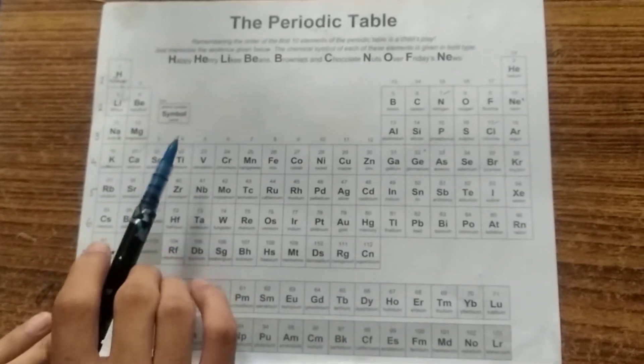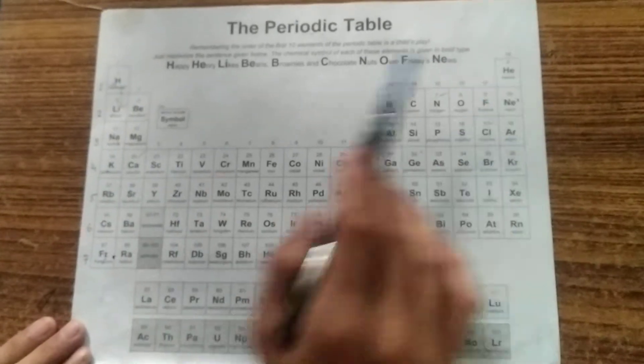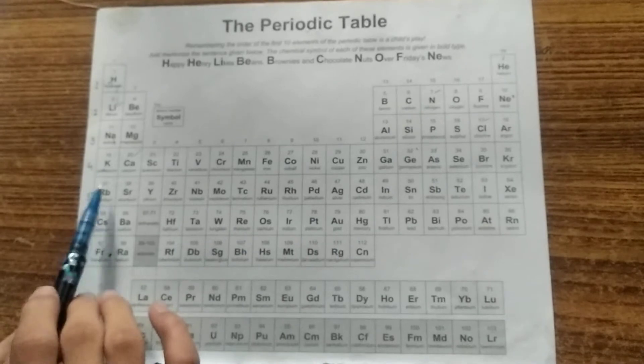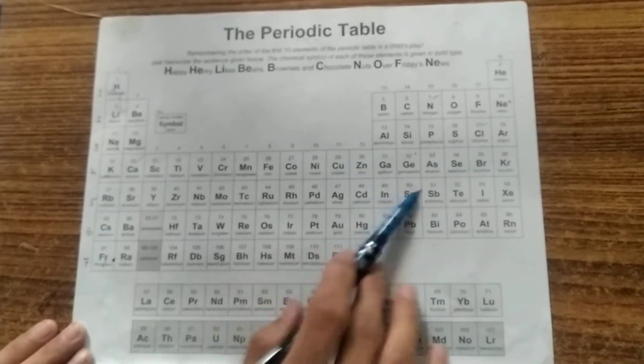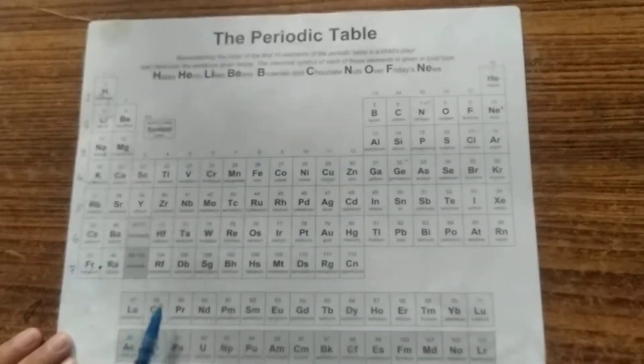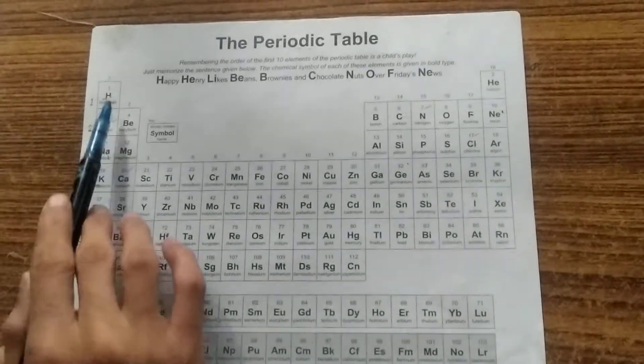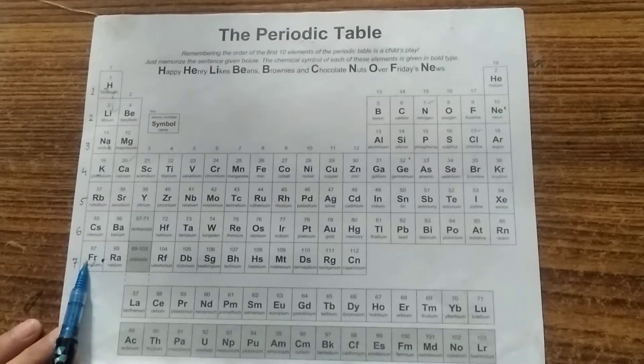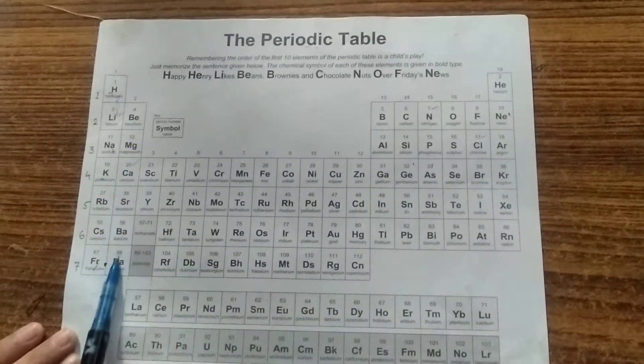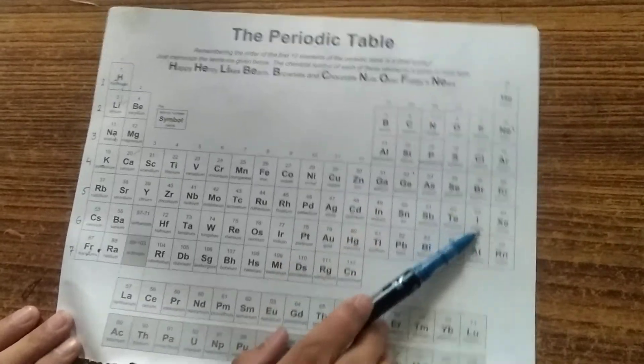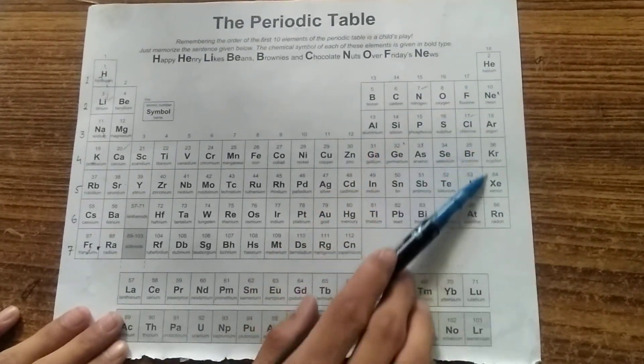In this first period there are 2 elements. In the second and third period there are 8 elements. Fourth and fifth period there are 18 elements. And in the sixth and seventh period there are 32 elements. Here rest are here. Now the first group are called the alkali metals. Second group called the alkaline earth metals. 17th group is called halogens. And 18th group is called noble gases.